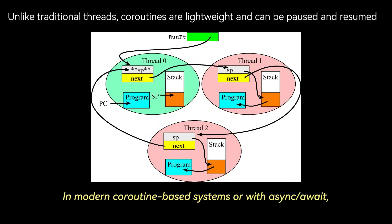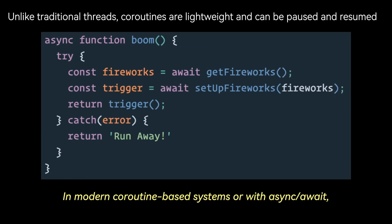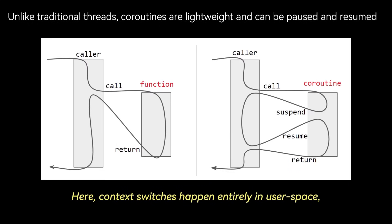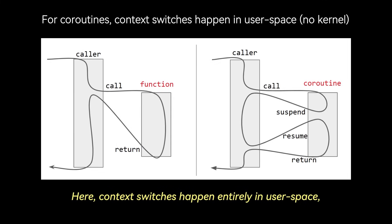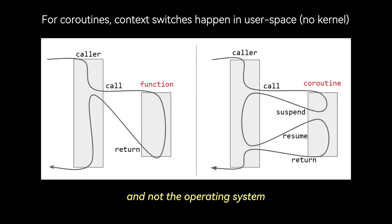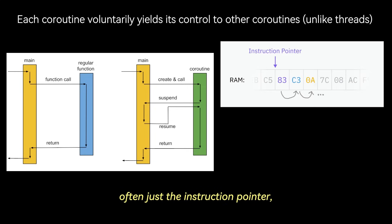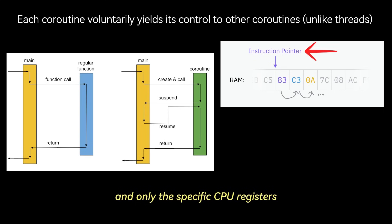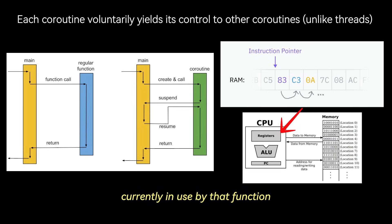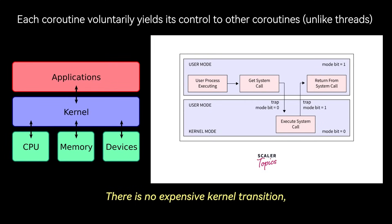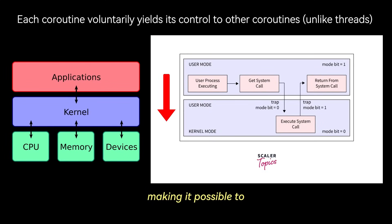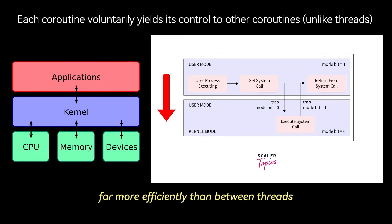In modern coroutine-based systems, or with async/await, the cost is dramatically lower. Context switches happen entirely in user space, managed by the application's runtime or scheduler — not the operating system. The state that needs to be saved is minimal: often just the instruction pointer, knowing where to resume, and only the specific CPU registers currently in use by that function. There is no expensive kernel transition, making it possible to switch between tens of thousands of coroutines far more efficiently than between threads.